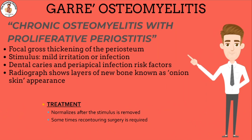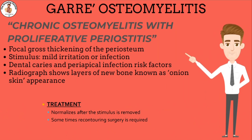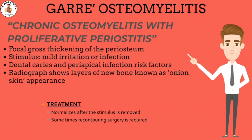Radiographic features show multiple thin layers of new bone in the involved area, known as the onion skin appearance. It normalizes after the stimulus is removed. Sometimes re-contouring surgery is required.